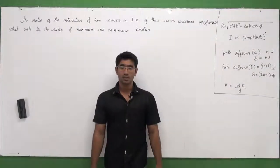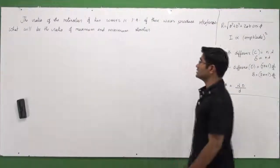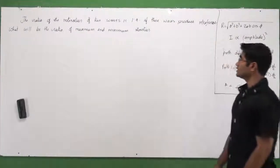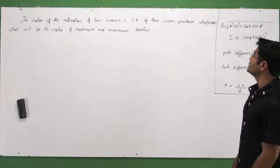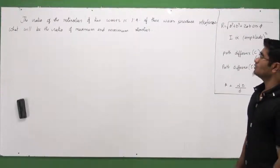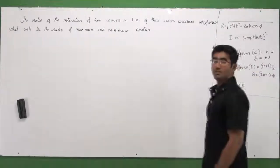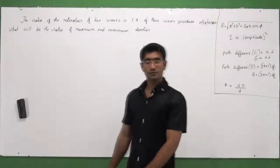Let's work with this problem on the board. It says the ratio of intensity of two waves is 1:9, and if these waves produce interference, what will be the ratios of maximum and minimum intensities?